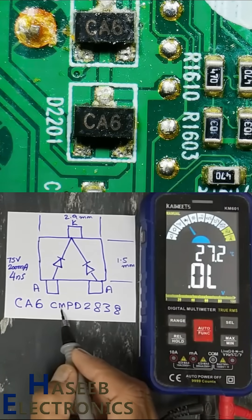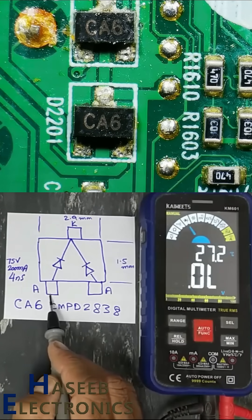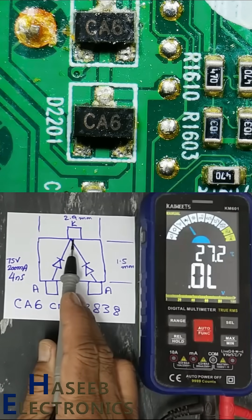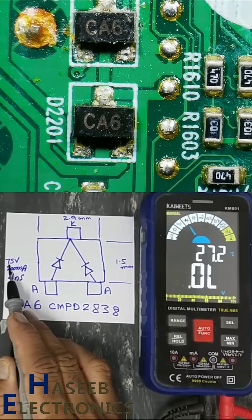CA6 is CMPD2838, a three pin component with two anodes and a common cathode. It is a common cathode dual diode package.